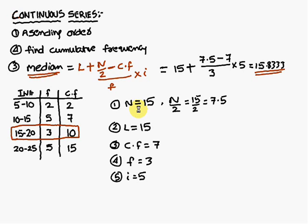The second point is, in the previous problems, individual observations and discrete series, median is size of N plus 1 by 2th item. Here for N by 2 only you have to consider in continuous series. N by 2 is 7.5. This 7.5 always you have to look for in cumulative frequency.